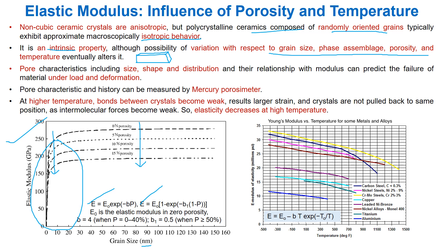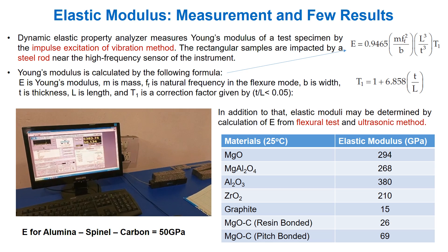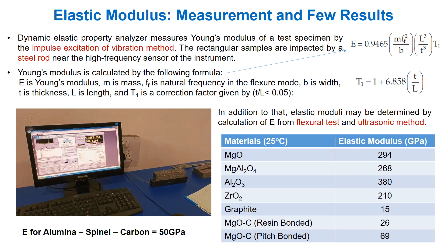Analogous to porosity, temperature reduces the modulus at high temperature, where bonds between crystals become weak, resulting in larger strain. Crystals are not pulled back to the same position as intermolecular forces become weak, so elasticity decreases at high temperatures. A simple impulse excitation of vibration method has been shown in the video, and elastic modulus can be calculated from relevant equations. Despite this method, we can also measure E through flexural and ultrasonic velocity methods. The ultrasonic method is a well-accepted technique for large safety-critical refractories and is usually a non-destructive test.